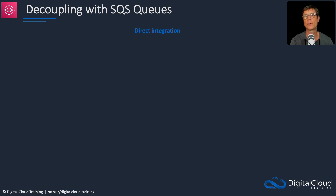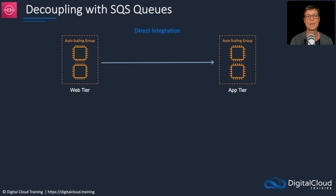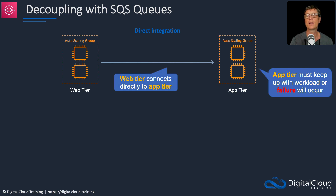If you're not doing decoupling, you're doing a direct integration. So let's say we have a web tier, an auto scaling group with EC2 instances, and then we have an app tier. What's happening is the web tier is receiving some kind of information that it has to then send to the app tier for processing. With a direct integration, the web tier is sending straight to the app tier. One of the limitations here is that the app tier must keep up with the workload, otherwise you get a failure.